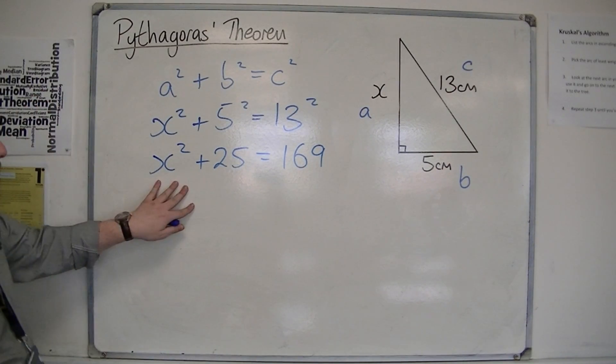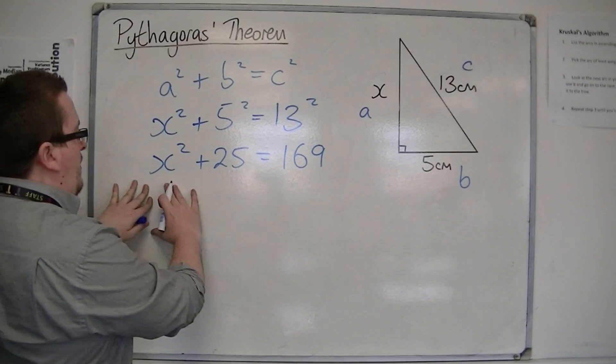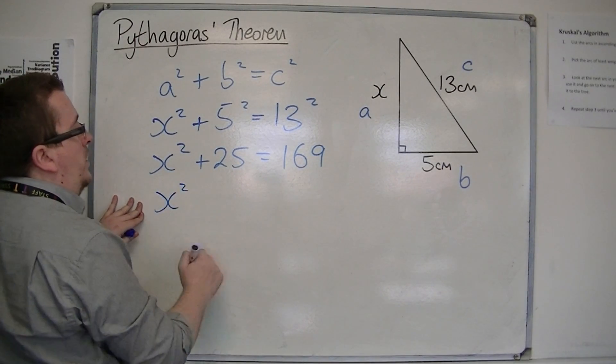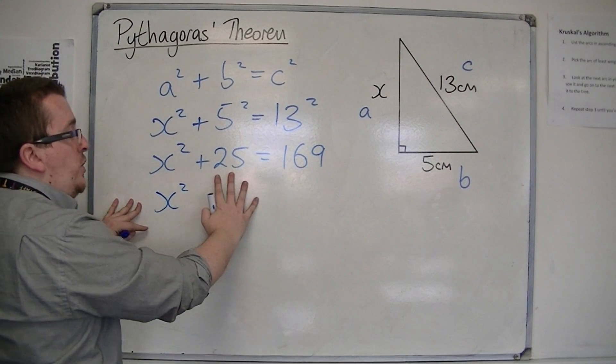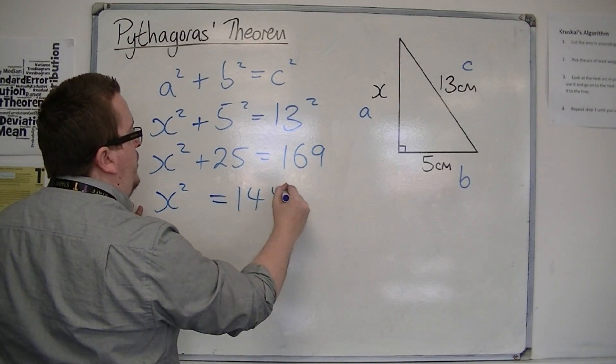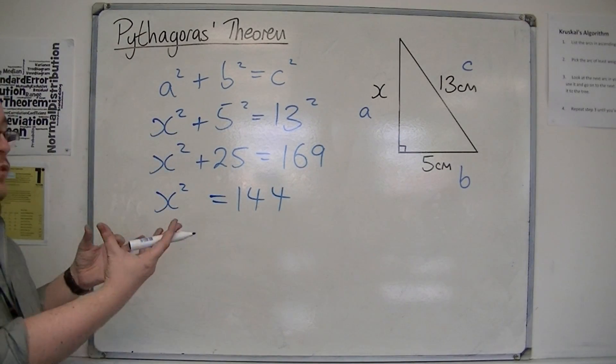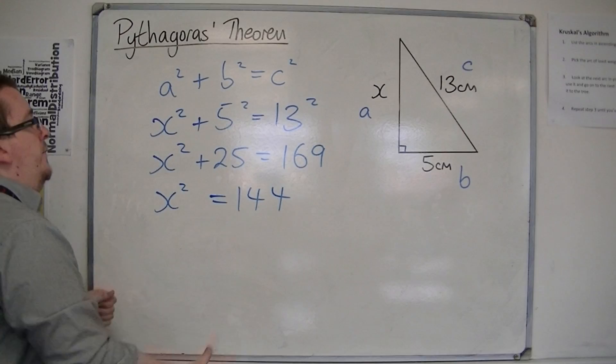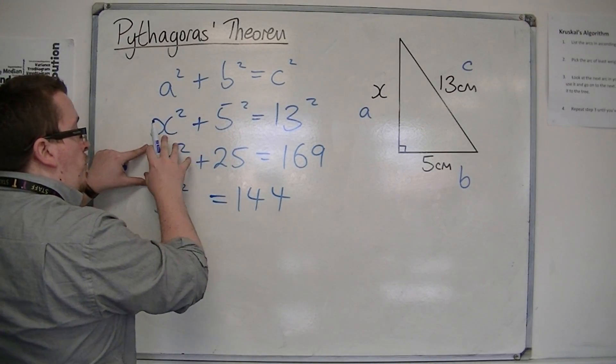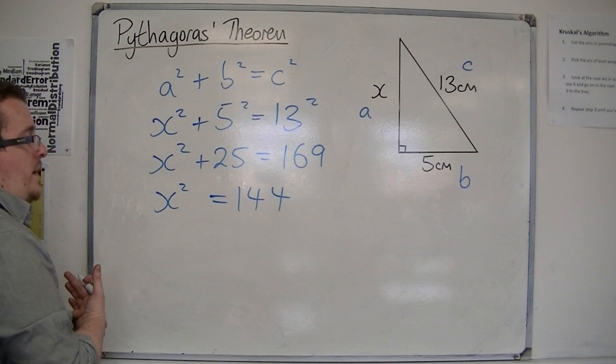Now, if something plus 25 is 169, then the something must be equal to 169 take away 25, so 144. So you can see that there is a subtraction here, rather than the addition that was there before. So 144 plus 25 is 169. That's why x squared is 144.